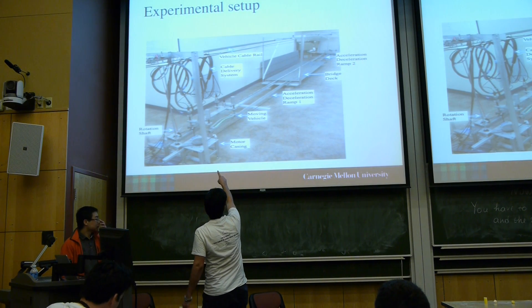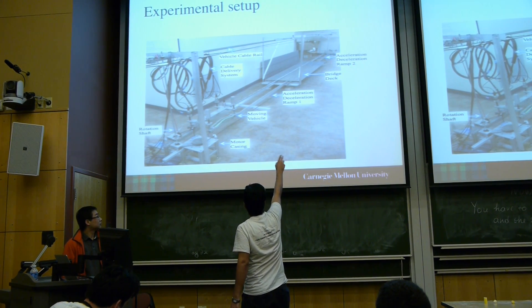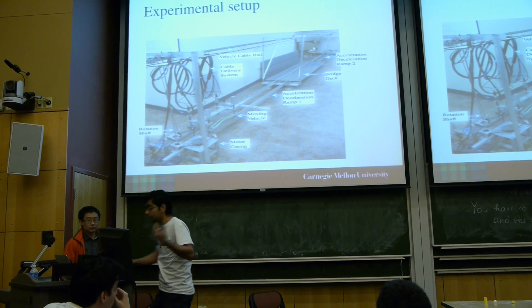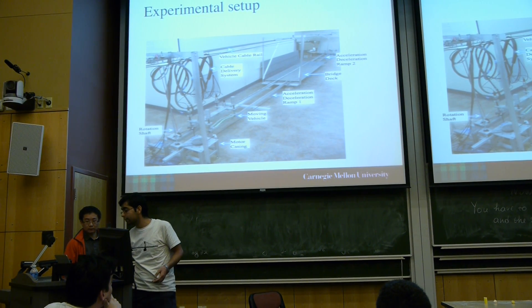This is the model of the car, that one is the bridge, and we have four sensors on the car and one sensor on the bridge. We are getting vertical acceleration data.